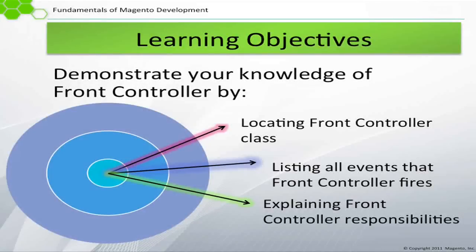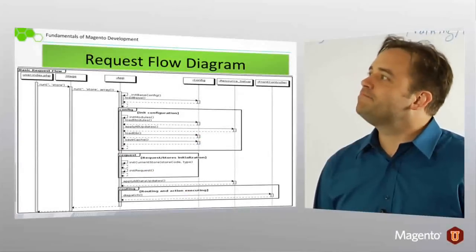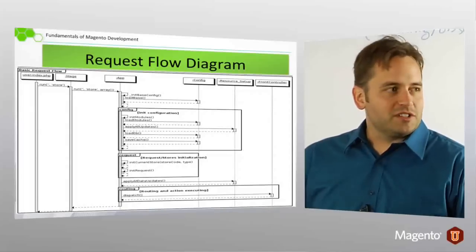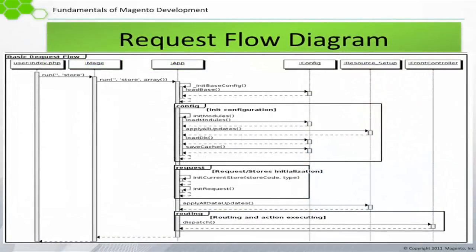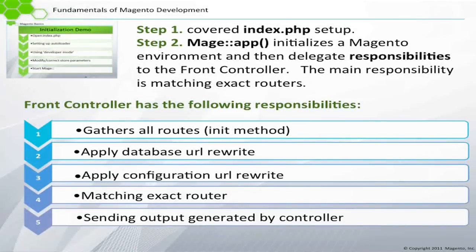So we start with the front controller. You recall this diagram from the previous lesson where we initialize the application and then we get down to routing, which is the responsibility of the front controller.